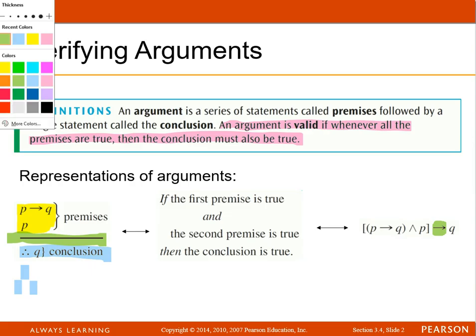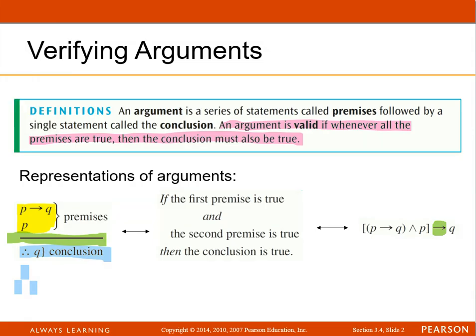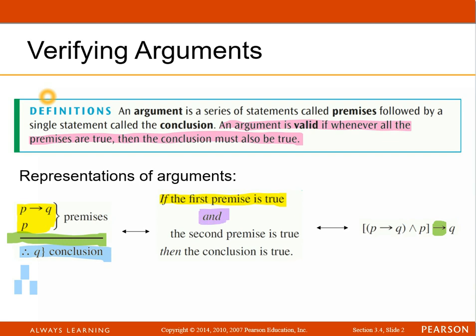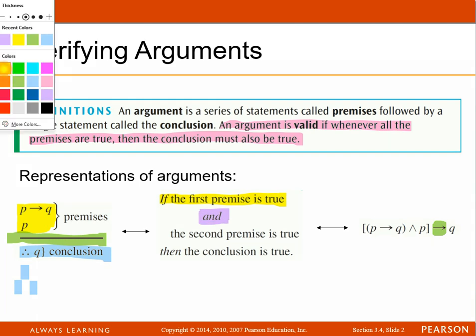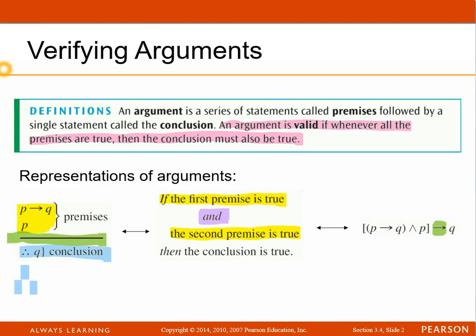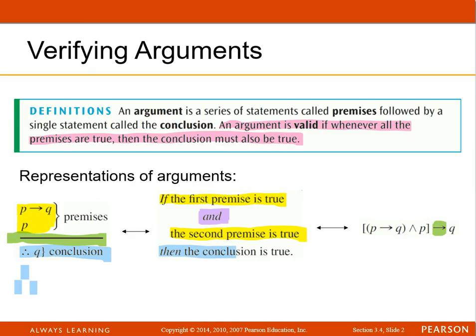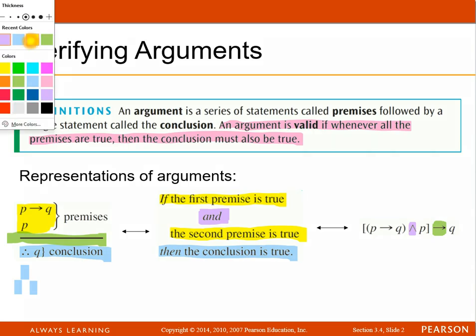So the way they wrote it out in words is, if the first premise is true, and the second premise is true, then the conclusion is true. Now, for every premise that you have, you have to connect them with an and.